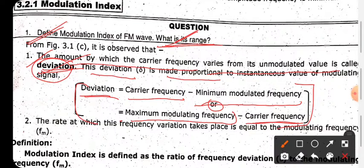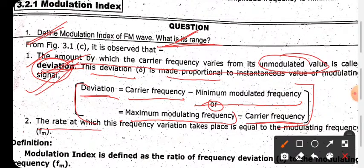The unmodulated value refers to the carrier frequency. The modulating signal, or information signal, causes the carrier frequency to vary — that variation is what we call deviation. The rate at which this frequency variation takes place is equal to the modulating frequency FM.